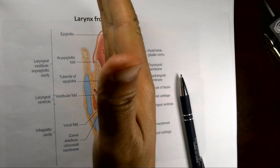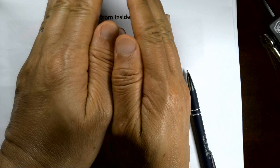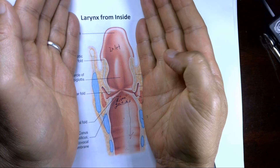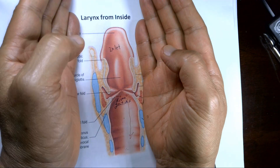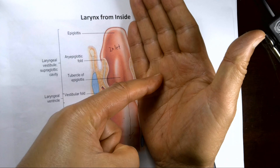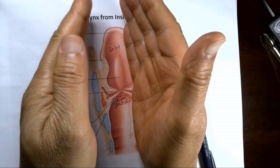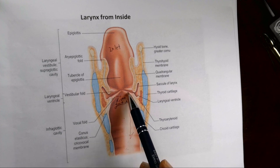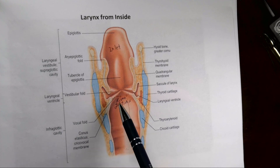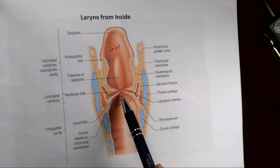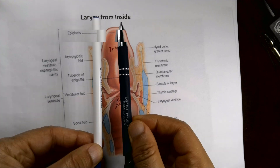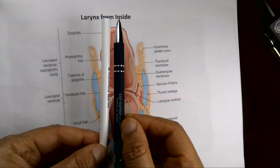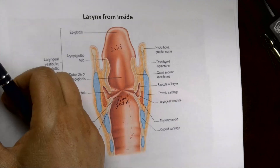If you cut the larynx from the back and open it, you see the right and left sides. You find two folds: the vestibular fold and the vocal fold. When you return everything back to normal, the space created between the two vocal cords is the narrowest area of the larynx — we call it the rima glottis. This is the narrowest part of the airway.